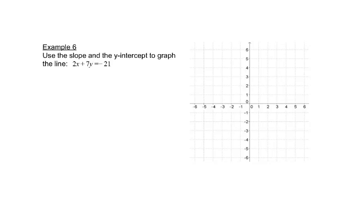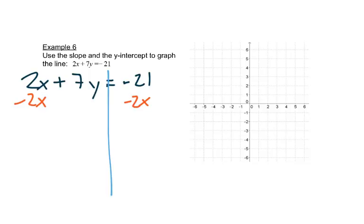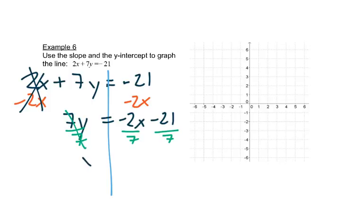Same idea here, but we have to put this equation in the right form again. So we'll start by subtracting 2x from both sides. And that gives us 7y is equal to negative 2x minus 21. And then I divide each part by 7. So I get y is equal to negative 2 sevenths x minus 3.